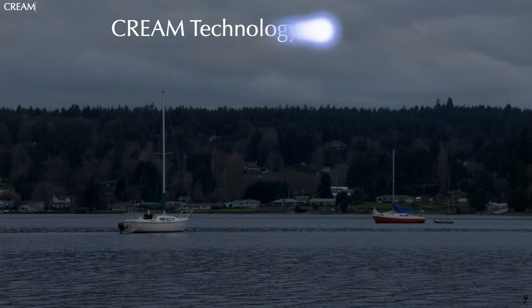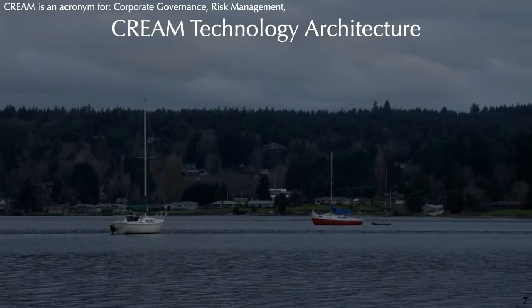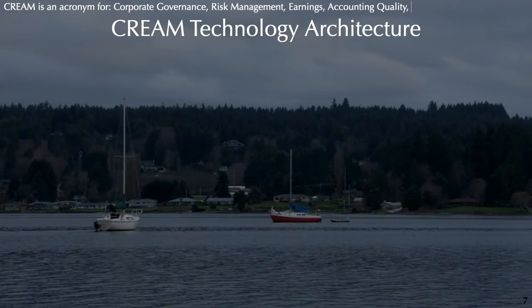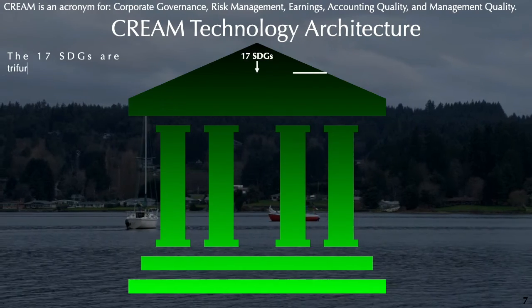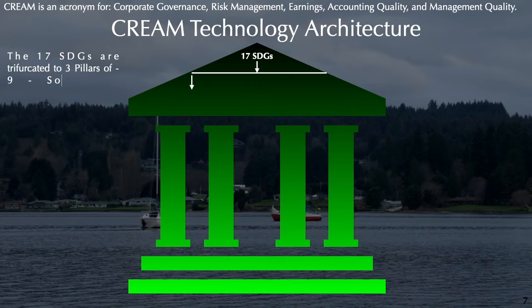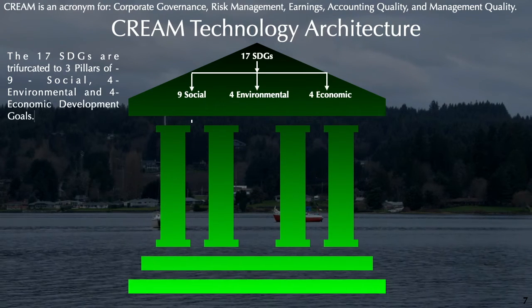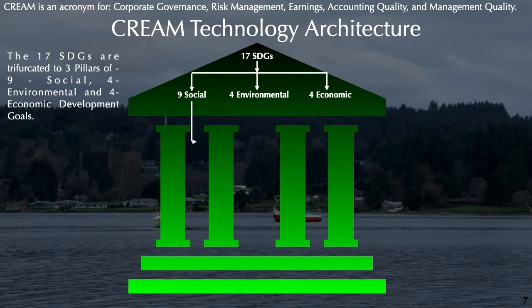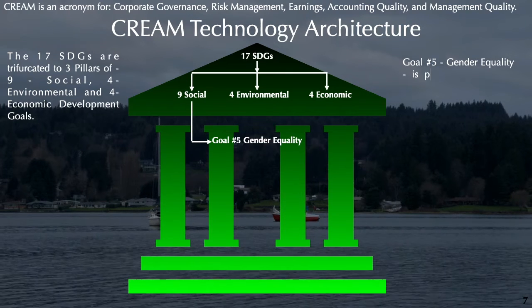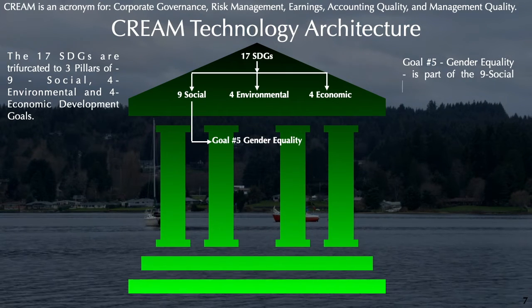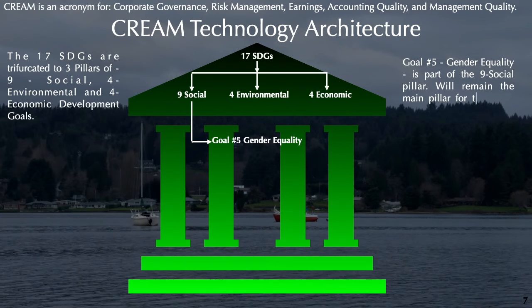CREAM Technology architecture — CREAM is an acronym for Corporate governance, Risk management, Earnings, Accounting quality, and Management quality. The 17 SDGs are trifurcated into three pillars: nine social, four environmental, and four economic development goals. Goal number five — gender equality — is part of the nine social pillar and is the main pillar for the entire 17 SDGs.